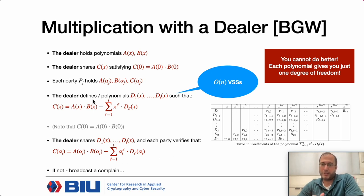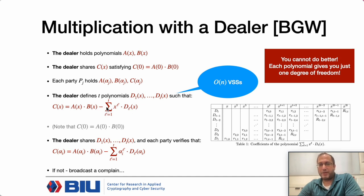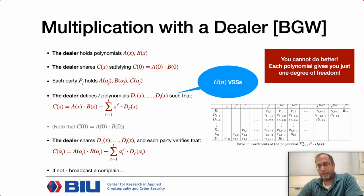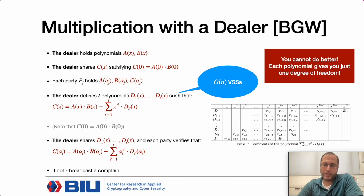The dealer shares the polynomials, each party verifies the relationship holds, and if not, broadcasts a complaint. The parties can reconstruct the share and publicly check the relationship. This requires a linear number of VSSs in the number of parties, and this seems essentially necessary: since we share a polynomial of degree t and the adversary controls t corrupted parties, we only hide one coefficient per polynomial. To remove t coefficients, it seems necessary to share t polynomials.